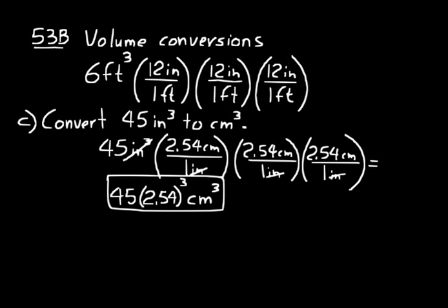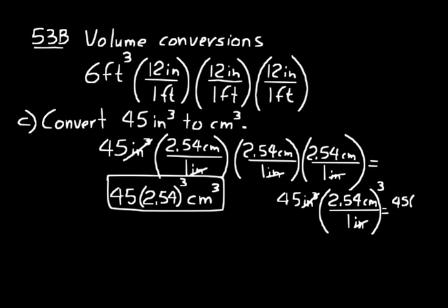One shortcut to simplify: instead of writing the conversion factor three times, write 45 inches cubed times the quantity (2.54 centimeters over 1 inch) cubed. Cancel the inches and write your answer as 45 times 2.54 cubed, centimeters cubed — same result. You can do this for area too: just square the conversion factor instead of writing it twice. If this shortcut confuses you, go ahead and write out all three conversion factors individually.